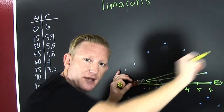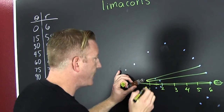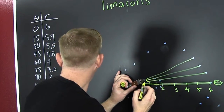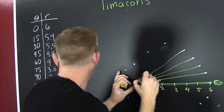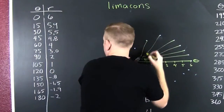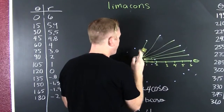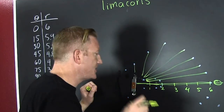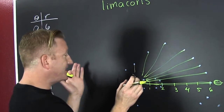So we're rotating and we're going out r far. At 45 degrees, we're at 4.8. Then four. Then three. Then two. Then one. These are all approximations to the tenth's place. That was 90 degrees.